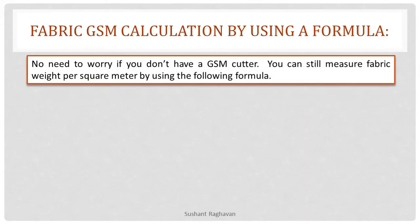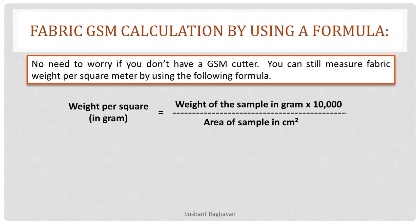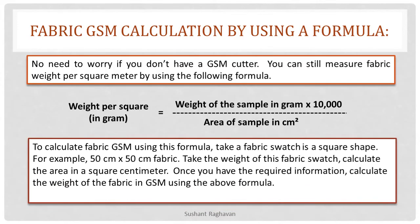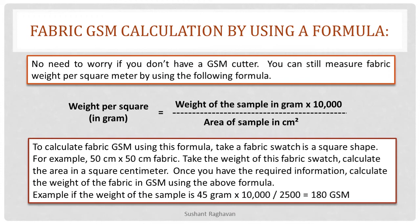Fabric GSM calculation by using a formula. No need to worry if you don't have a GSM cutter — you can still measure fabric weight per square meter using the following formula: weight per square meter in grams equals weight of the sample in grams multiplied by 10,000, divided by area of sample in square centimeters. To use this formula, take a fabric swatch in a square shape — for example, 50 cm × 50 cm fabric. Take the weight of this fabric swatch and calculate the area in square centimeters. Once you have the required information, calculate the weight of the fabric in GSM using the formula. Example: weight of the sample is 45 grams × 10,000 ÷ 2,500 = 180 GSM.